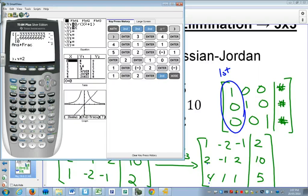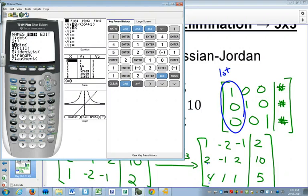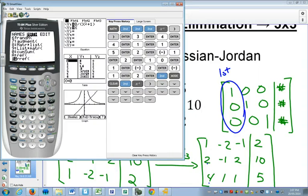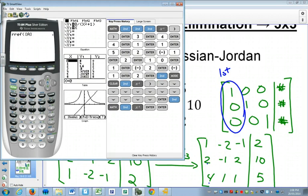So what we're going to do is we're going to go to matrix, we're going to go to math for matrix. And hidden below all of this, rref, which stands for reduced row echelon form. And if you hit that button, reduced row echelon form of matrix A, it does it for you. And it tells you that x is going to be 1, y is going to be negative 2, and z is going to be 3.